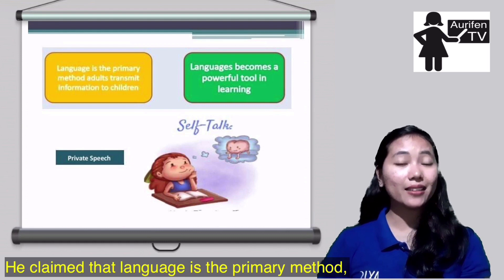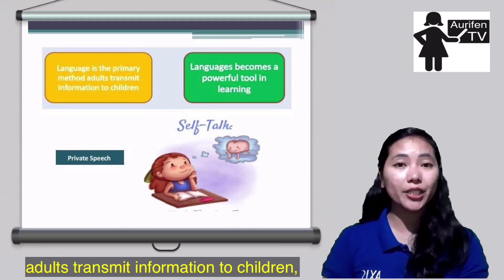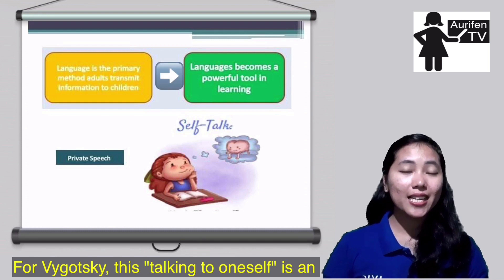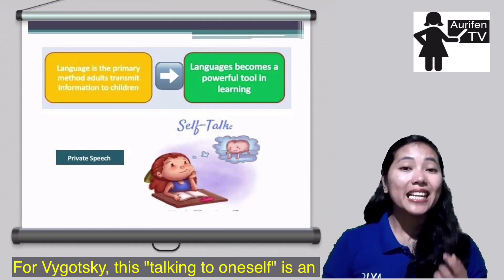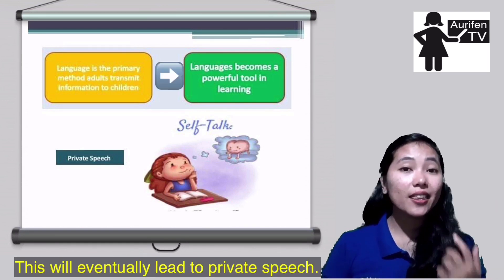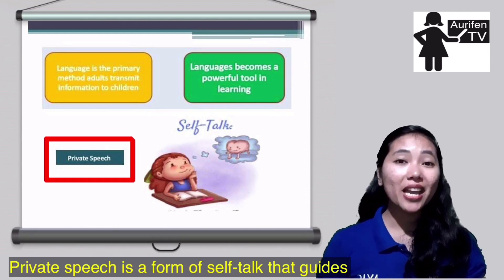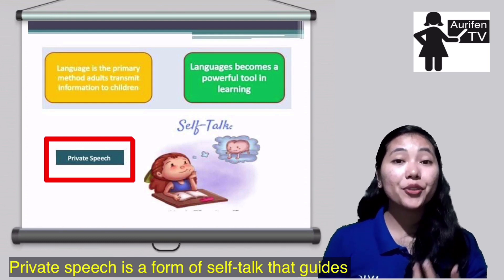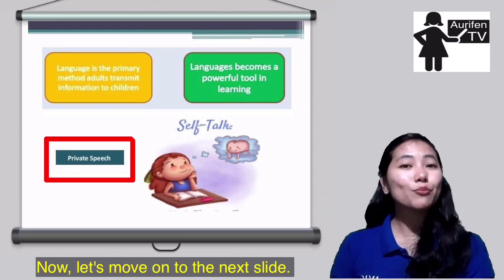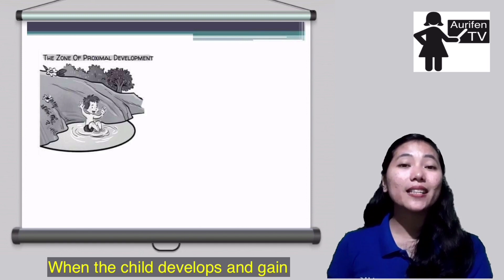Vygotsky claimed that language is the primary method adults use to transmit information to children, and it becomes a powerful tool in learning. For Vygotsky, a child talking to oneself is an indication of the thinking that goes on in the mind of the child. This eventually leads to private speech, which is a form of self-talk that guides the child's thinking and action.